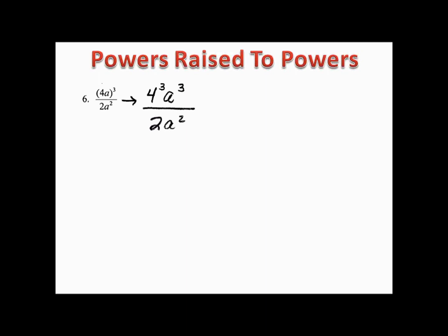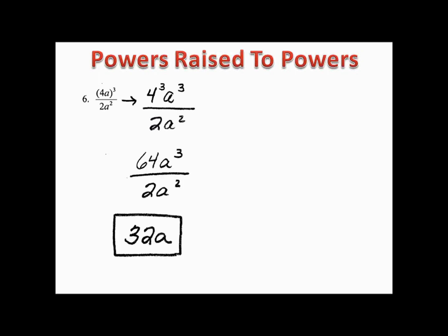Example six: please pause the video and give this one a try. We begin by distributing that 3 into the numerator, giving us 4³ · 2³ · a³ over 2a². Four to the third is 64, and 64 divided by 2 is 32. Then a³ divided by a² is simply a to the first, so the answer is 32a.